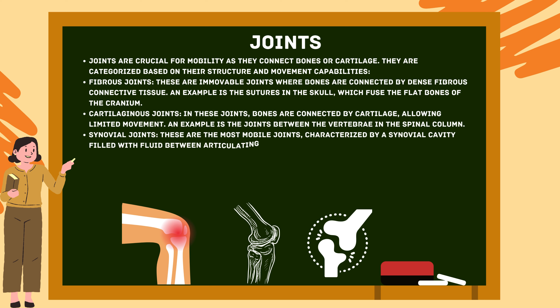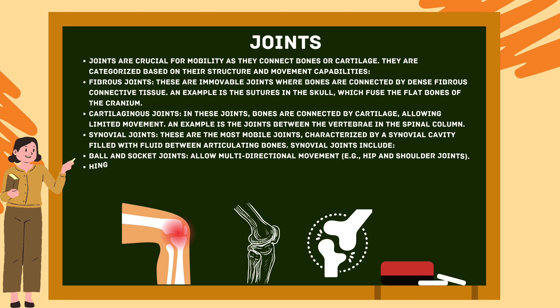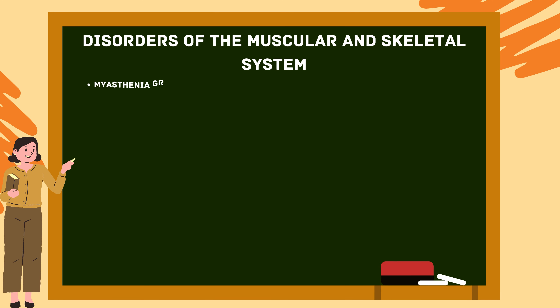Synovial joints are the most mobile joints, characterized by a synovial cavity filled with fluid between articulating bones. Ball and socket joints allow multi-directional movement, as seen in hip and shoulder joints. Hinge joints allow movement in one direction, like a door hinge — for example, the elbow and knee joints.